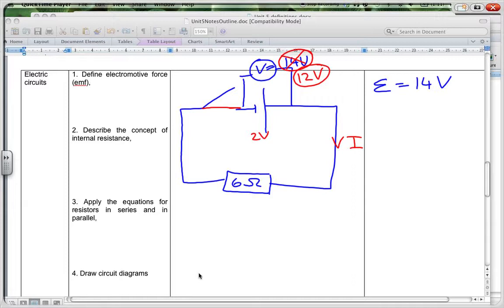So what's actually happened there is that it's gone through, the coulomb of charge has gone through, picked up 14 joules, but on the way through the cell, loses 2 joules. So it actually, in effect, only gets 12 joules per coulomb.